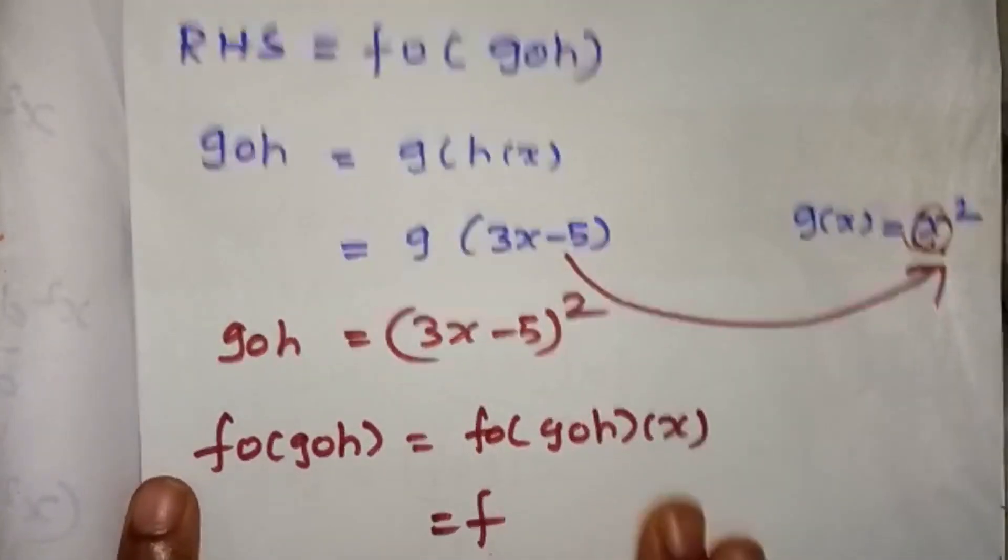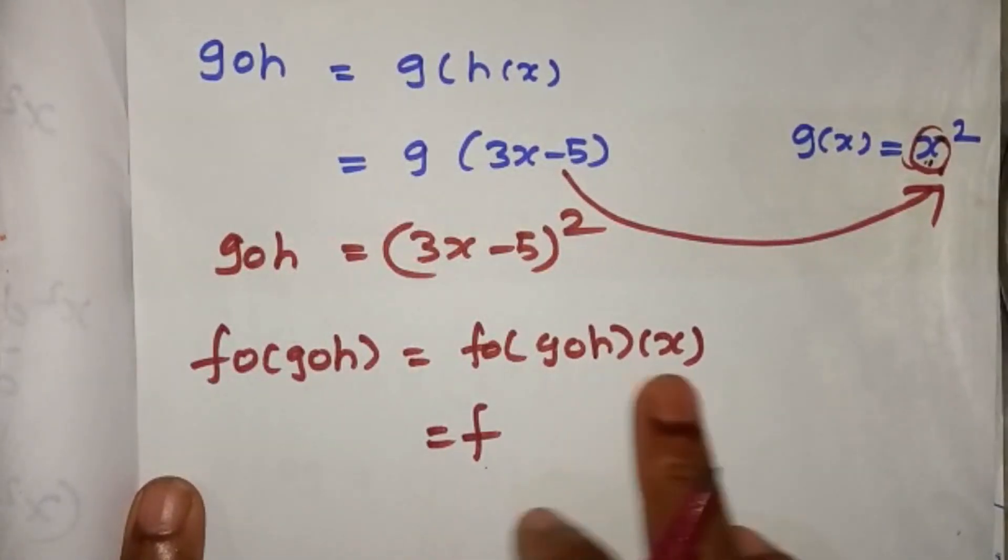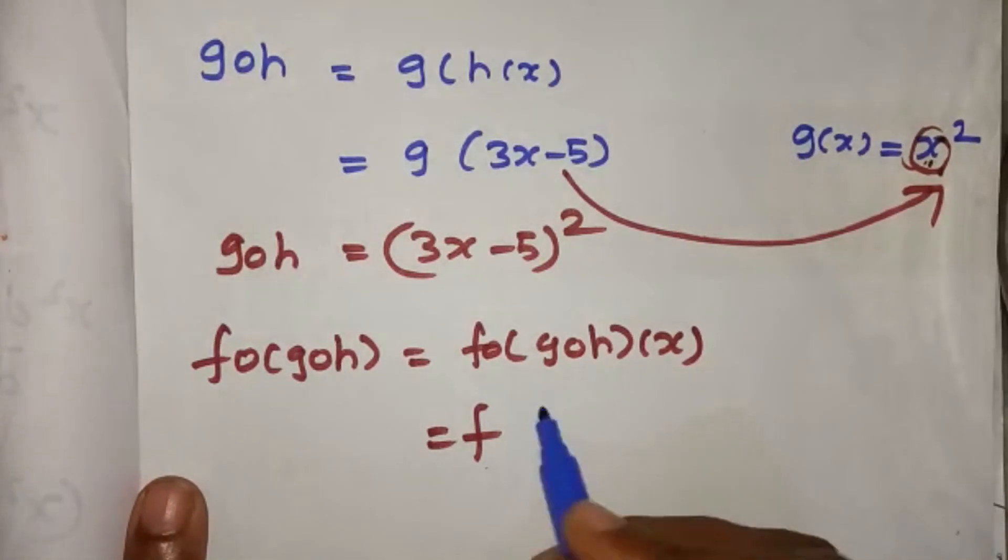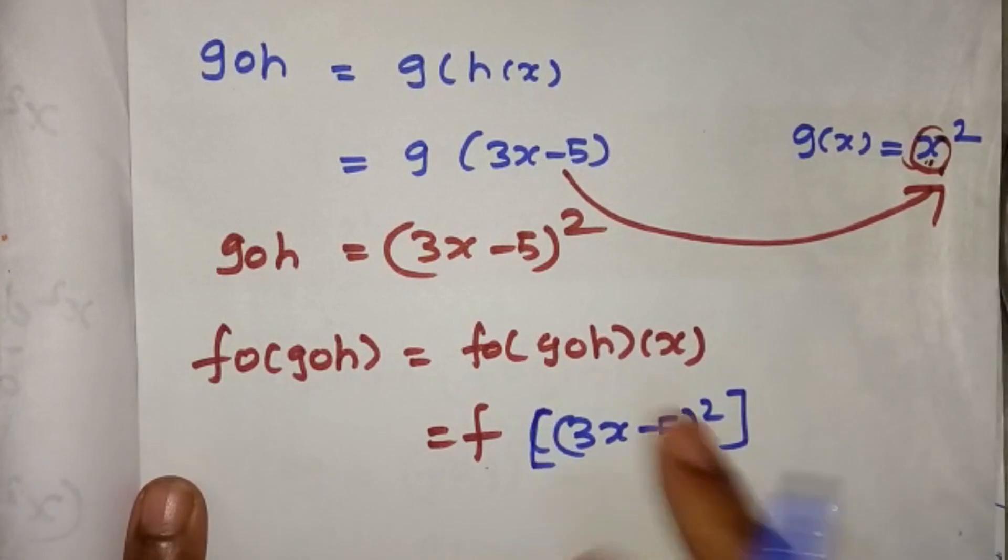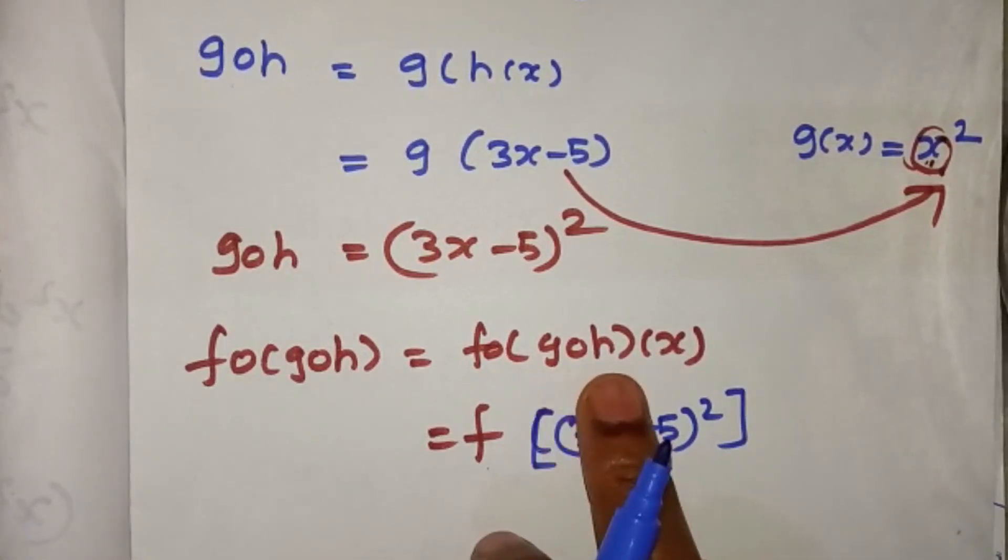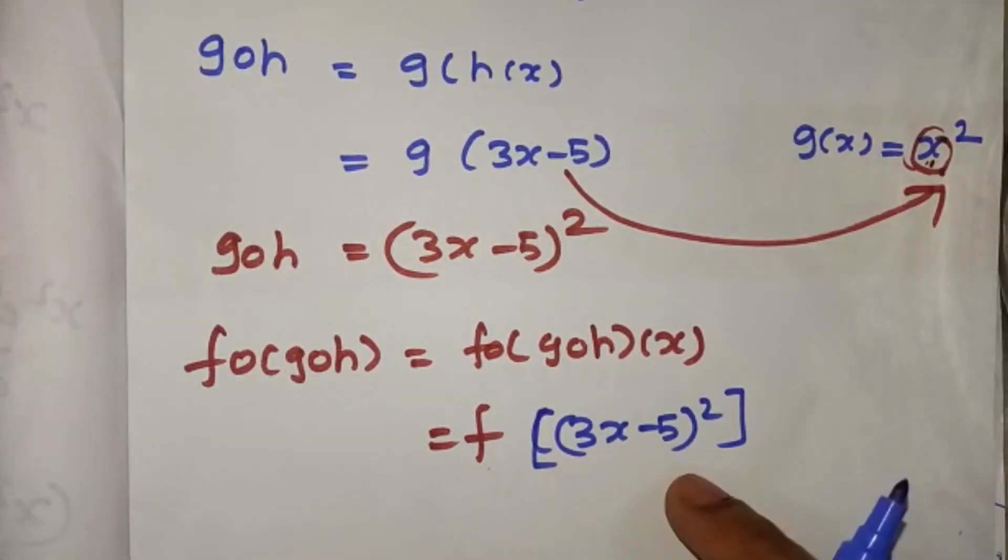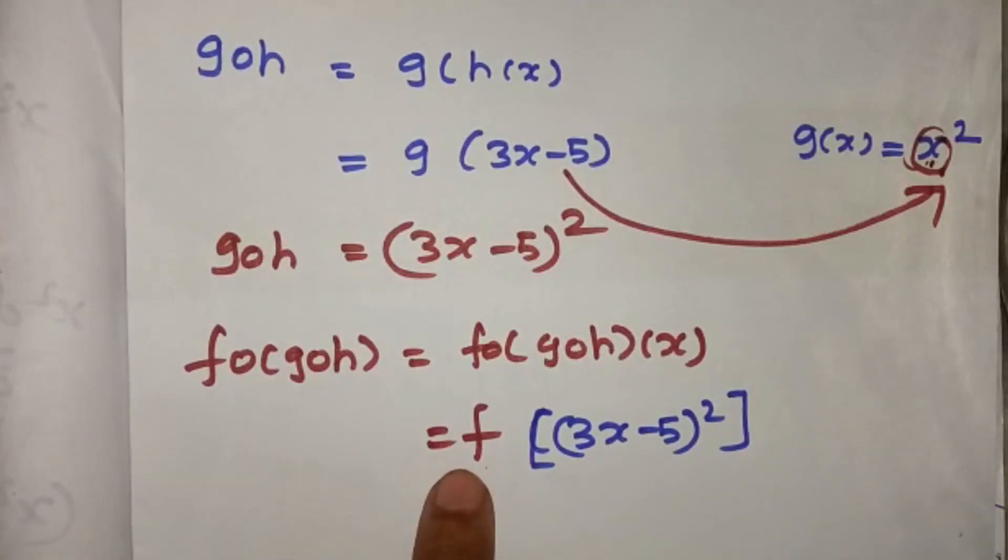g of h, we found. g of h is 3x minus 5 whole square. This is g of h.